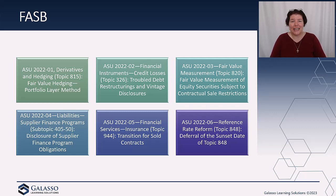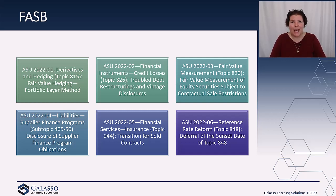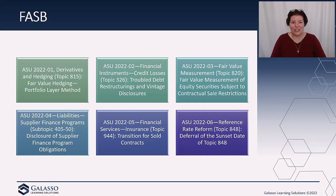Our last one is a change in the effective date for reference rate reform. The original standard, ASU 2020-04, was the last standard issued prior to COVID being a big thing, and it introduced a nice transition method for LIBOR going away. But LIBOR didn't go away as planned — it was supposed to go away in 2021, but it's going to continue to 2023. So the sunset provision in Topic 848 had to be extended, and FASB did that in ASU 2022-06.